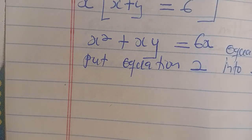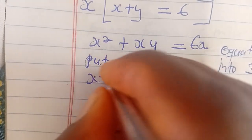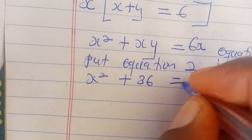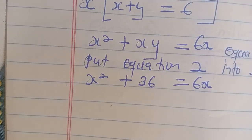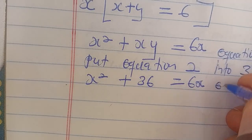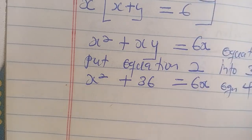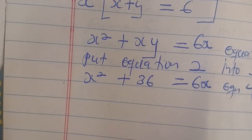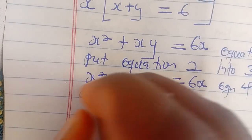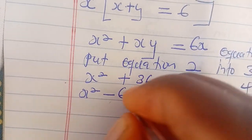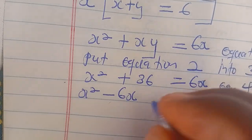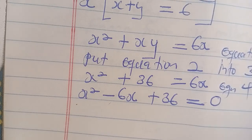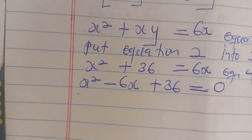From equation 2, xy is 36, so in place of xy we put 36. We're going to have x squared plus 36 is equal to 6x. Let's call this equation 4. Rearranging, we get x squared minus 6x plus 36 is equal to 0.